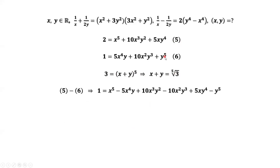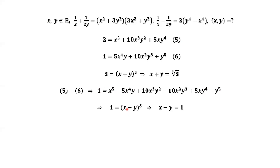Equation 5 minus equation 6. 2 minus 1 equals 1. Again, we can use the binomial formula to simplify the right-hand side. The right-hand side equals X minus Y to the power of 5. Taking the fifth root on both sides, we have X minus Y equals 1.